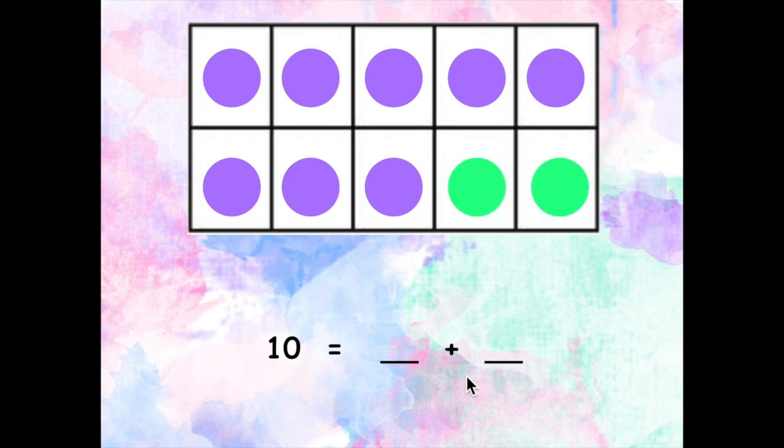What should my equation look like? You're right! It should say 10 equals 8 plus 2. Great job! And that's how you can use a 10-frame to break 10 into 2 groups.